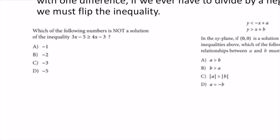Example: which of the following numbers is not a solution of the inequality? I could plug in the numbers, or I can solve algebraically. Solving: 3x - 5 ≥ 4x - 3.